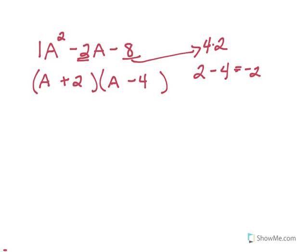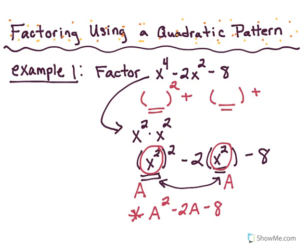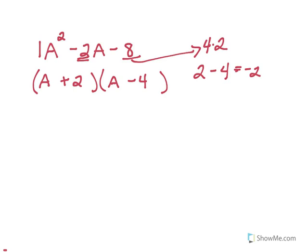Now, this is not my final answer because my original answer had X's in it. So do you remember what capital A stood for? And if you don't, let's look back and see. So it looks like I had A be equal to X squared. So I'm going to go back in my new problem and replace those A's with X squared. So then my final answer will be X squared plus 2 times X squared minus 4. And that would be my answer.